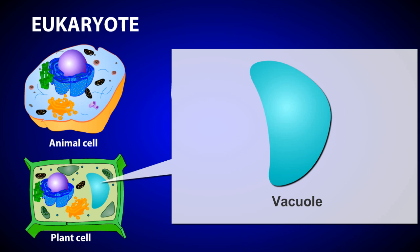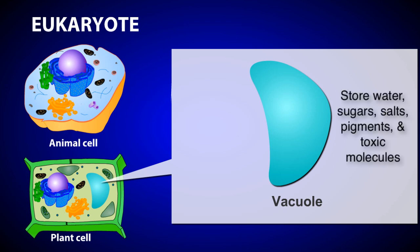Vacuoles are specialized membrane-bound structures found mostly in the cells of plants. Vacuoles usually store substances such as water, sugars, and salts, as well as pigments and toxic molecules. The pigments are responsible for the red, blue, and green colors of flowers and some leaves. The toxic chemicals keep the plant from being eaten by animals.